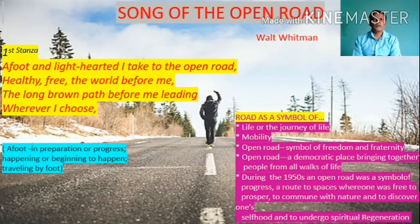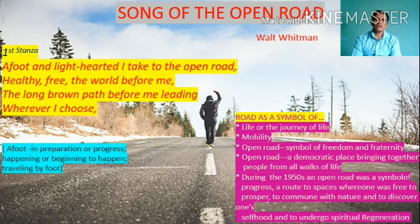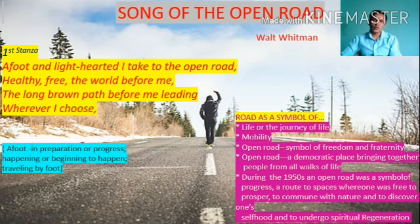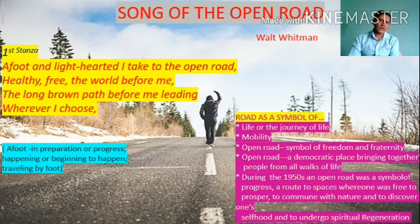'The long brown path before me leading wherever I choose.' The brown path — the journey of his life — is very long. Brown indicates many possibilities in his life. He will decide what to achieve, what to keep and what to keep aside. It means the road — the journey of life — will be moulded and chosen by the poet himself.